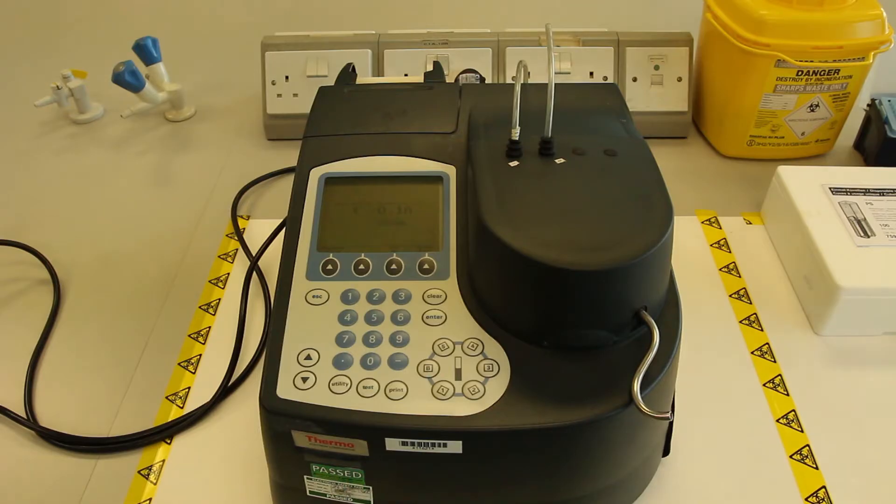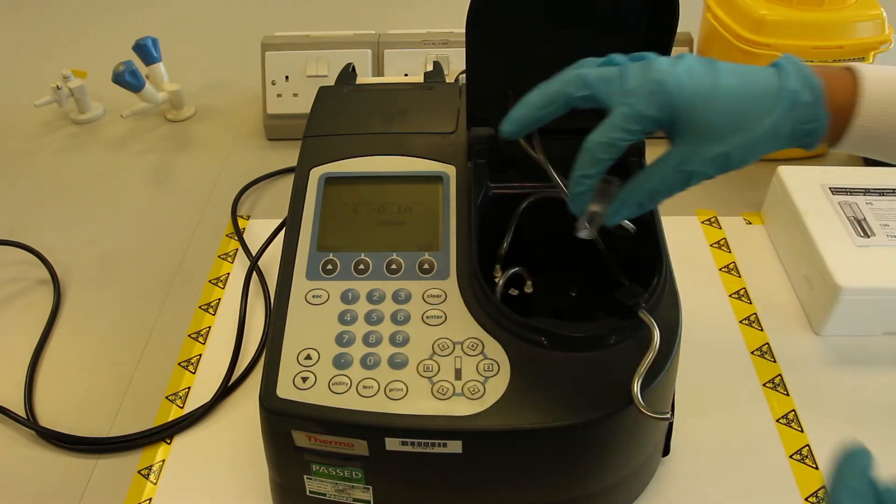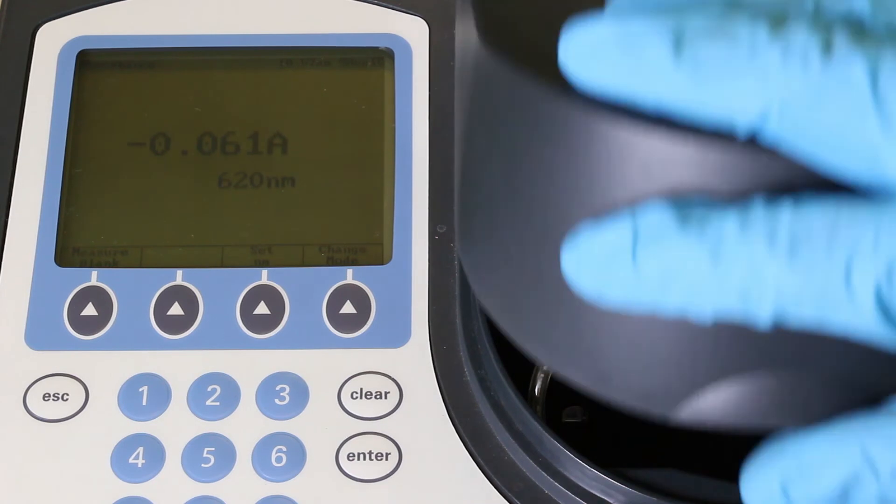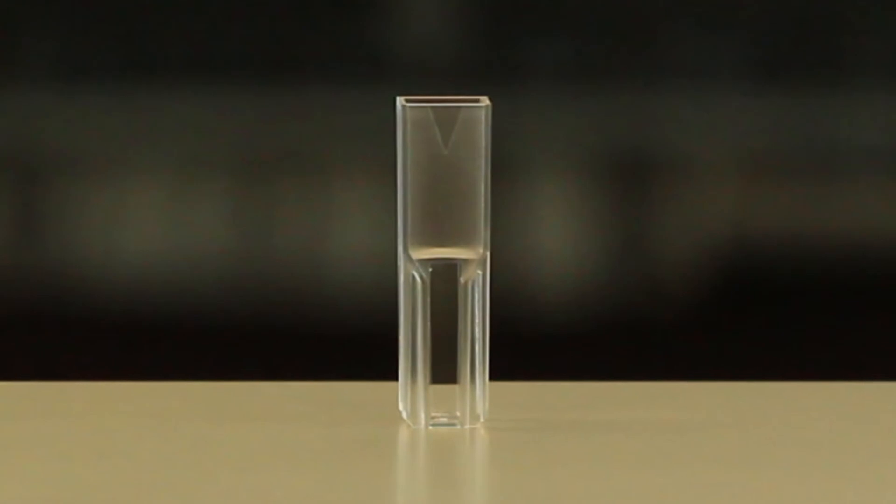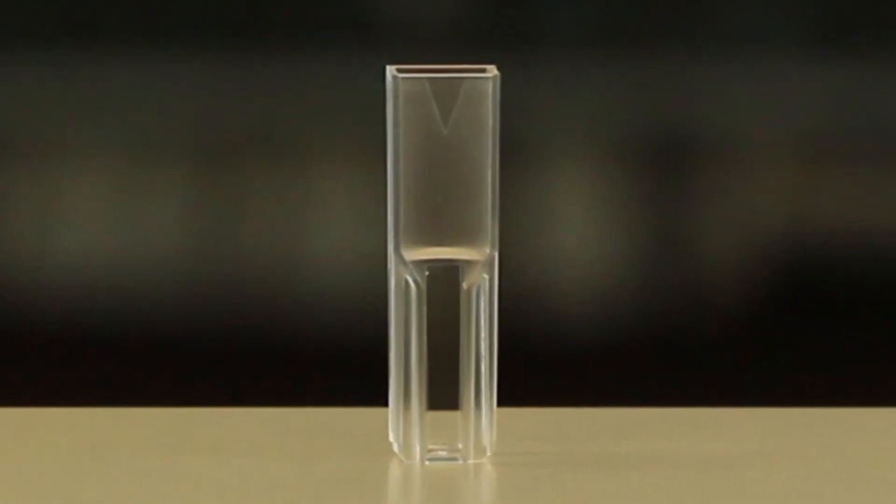The first cuvette to be put into the spectrophotometer will be the blank. Ensure that the clear smooth sides of the cuvette align with the light path, allowing a free passage of all light into the sample. There is a small inverted triangle printed on the cuvette to help you know how to orientate the cuvette when you put it into the cuvette holder.